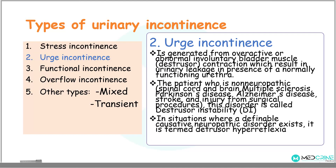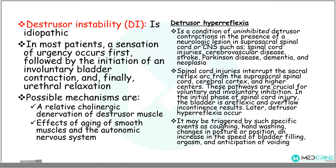The second type of urinary incontinence is urge incontinence. Urge incontinence is generated from an overactive or abnormal involuntary bladder muscle contraction. This contraction results in urinary leakage in the presence of a normally functioning urethral sphincter. In patients with detrusor instability, a sensation of urgency occurs first, then it is followed by the initiation of an involuntary bladder contraction, then finally urethral relaxation.